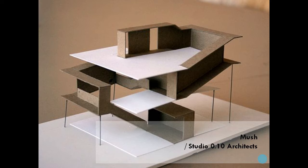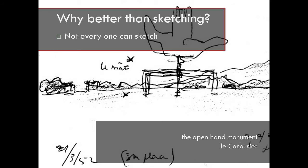This is another concept model just showing the spatial orientation, done by Studio 0.12 architects. Now, why is building models better than sketching? Not all architects sketch equally well or can deliver a proper presentation through sketching or communicate through sketching. As you can see here is a sketch by Le Corbusier which is not very pretty and it doesn't really convey what is going on on the site or what he's doing there. When in actual fact the sculpture does look like that, but for the everyday person you wouldn't know what you're looking at.